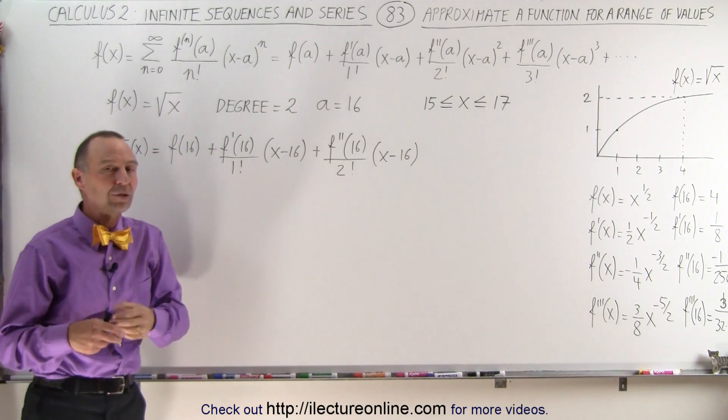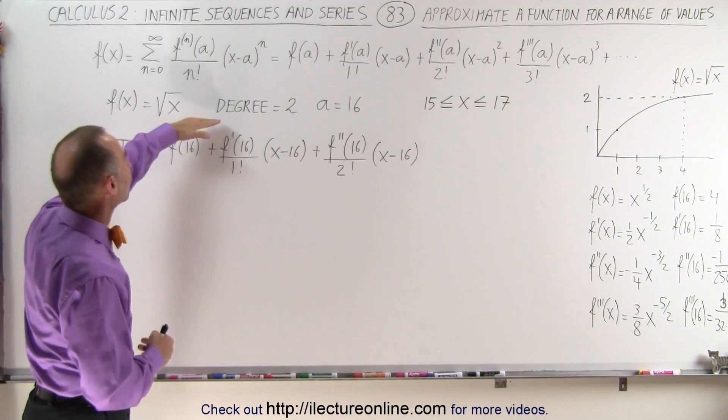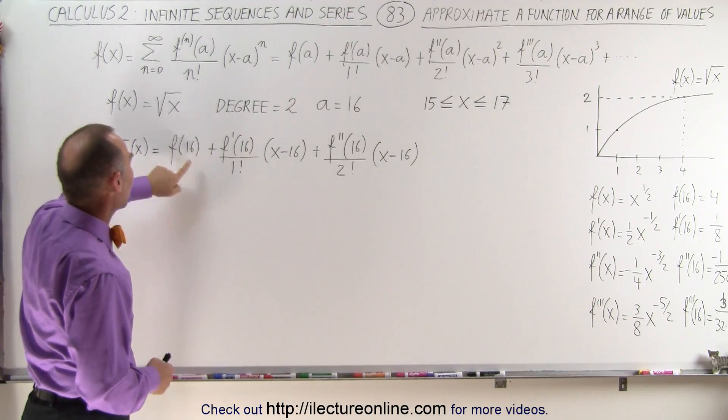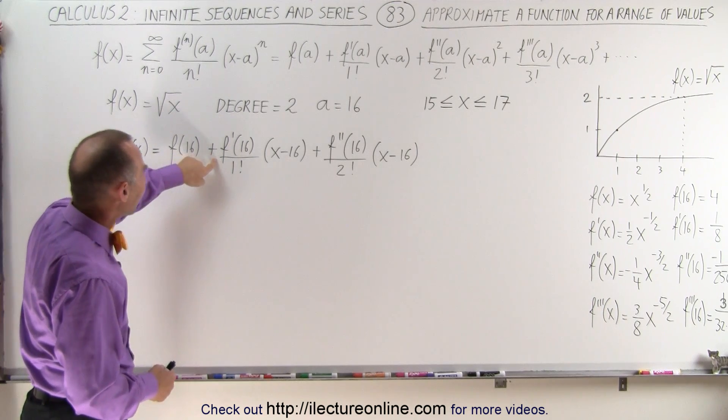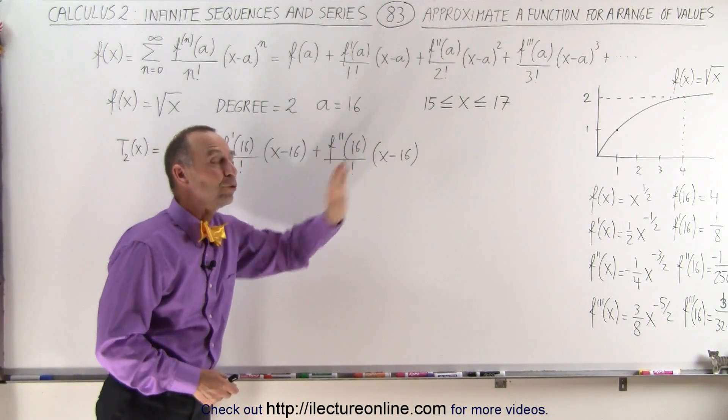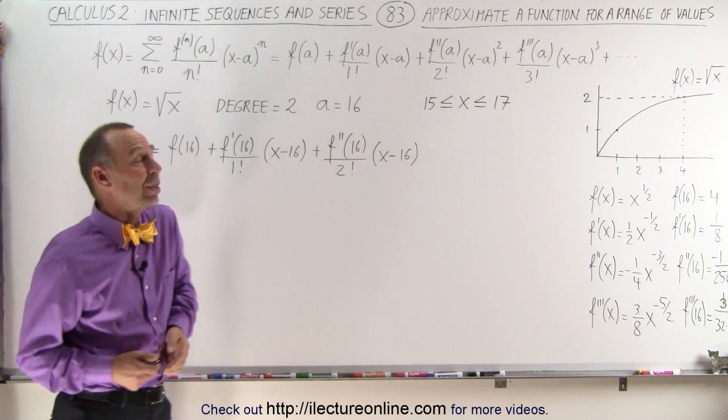We're going to only use the degree 2 polynomial expansion, which means we have the constant term, the f prime term, and the f double prime term, and we don't use the others. How can we get away with that?